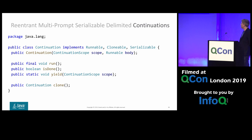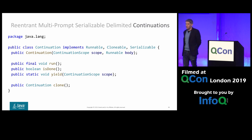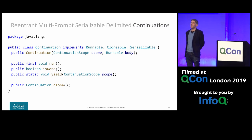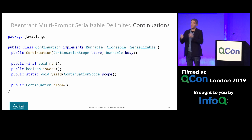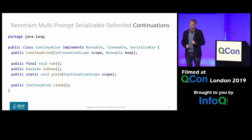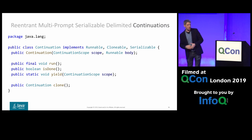Another interesting thing: we can make continuations serializable. This means you can write a piece of computation that blocks — say, waiting for a database response — and while waiting, it's not just suspended off the CPU but off the machine entirely. When the result comes back, you could be on a different machine altogether, perhaps closer to where the data is, making data access faster.